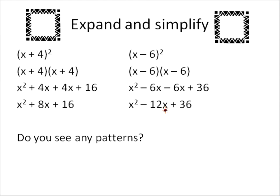The next thing that you'll notice, and this will be common for all perfect squares, is that if you take this number and square it, 4 times 4, you'll get the final term, 16. Negative 6 times negative 6, positive 36. So that's two patterns, two things that are the same between these two. You'll also notice that the solutions are exactly the same every time for these types of binomials.